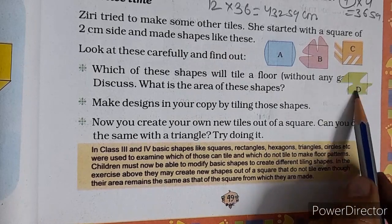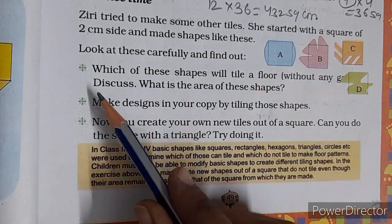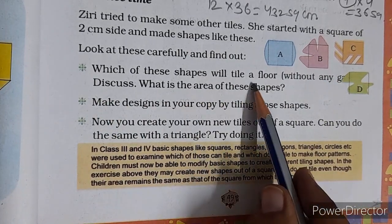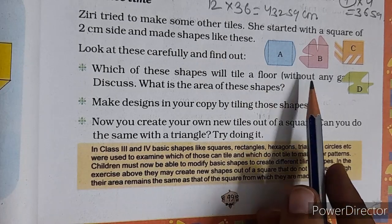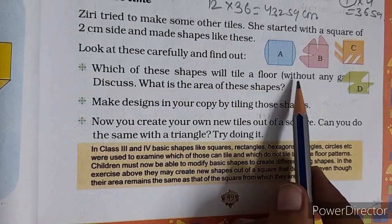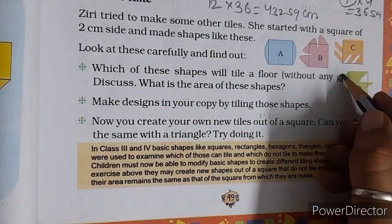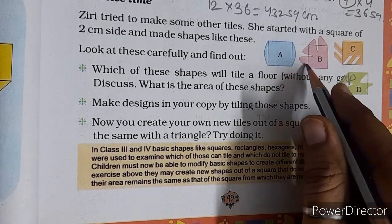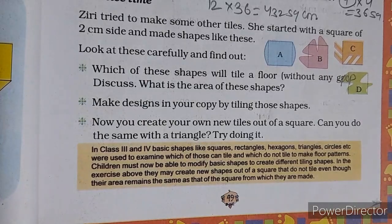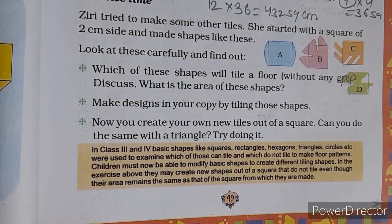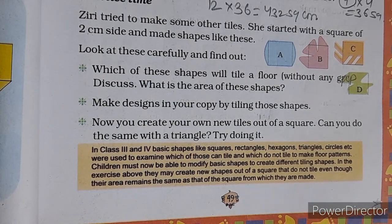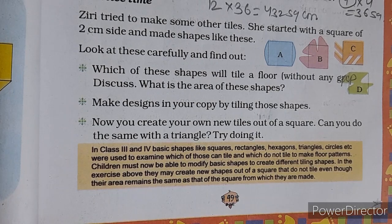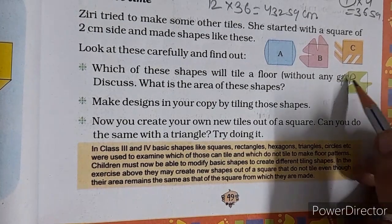Ziri tried to make other tiles. She started with a square 2 centimeter side and made shapes like this. So she made 2-2 centimeters shape. Now which of these shapes will tile a floor without any gap? Discuss what is the area of this shape. Now you can see which tiles will be without any gap. So you can see that the shapes are C and D. This is square. So this is without gap.